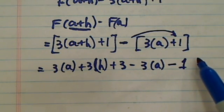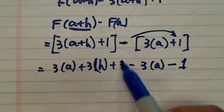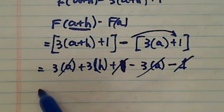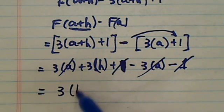Okay, minus 1 here. Oh, this is 1. Okay, and then 1 and 1 cancel. 3a, 3a cancels. So you have 3 times h. Alright?